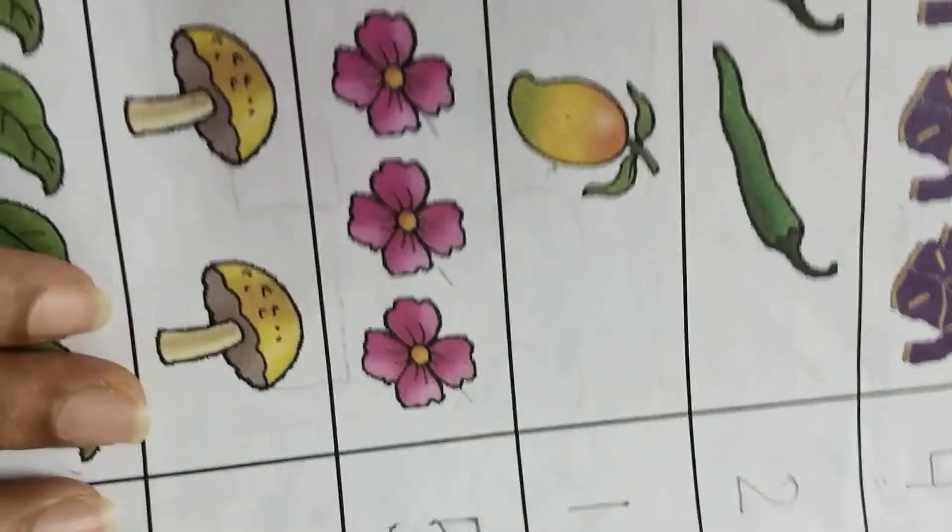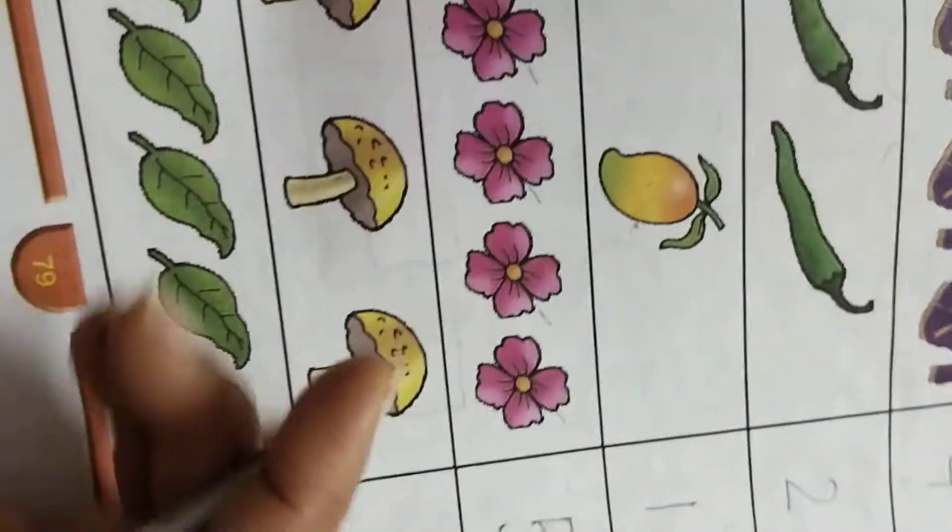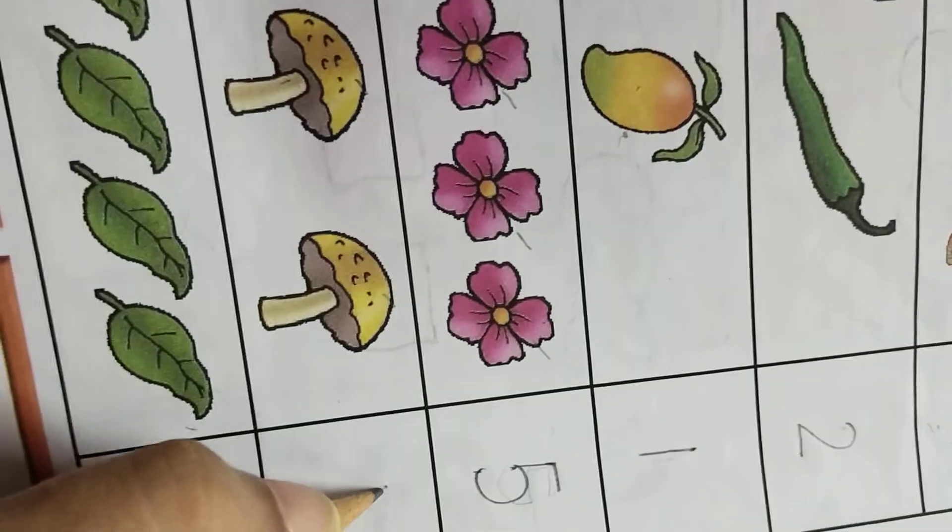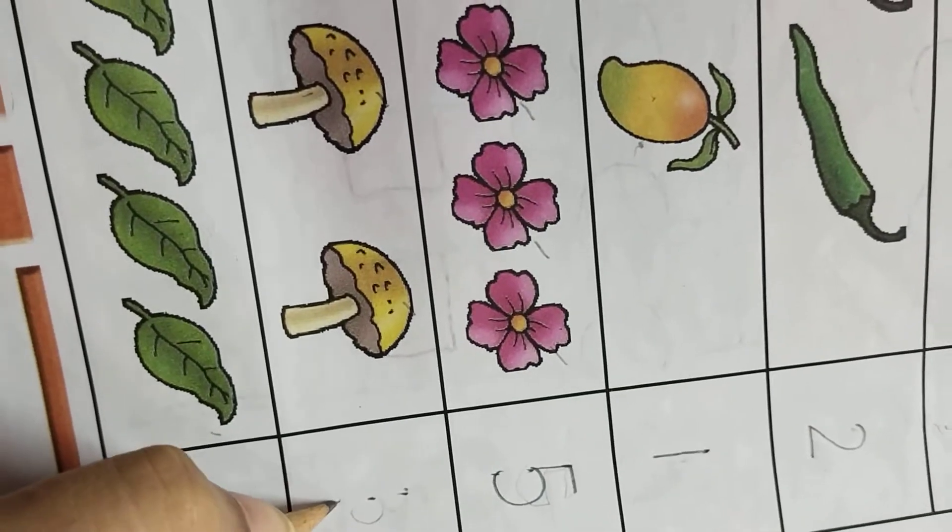In this way, you will write it. Next, count it please. One, two, three. So you will write here number three. Curl, again curl.